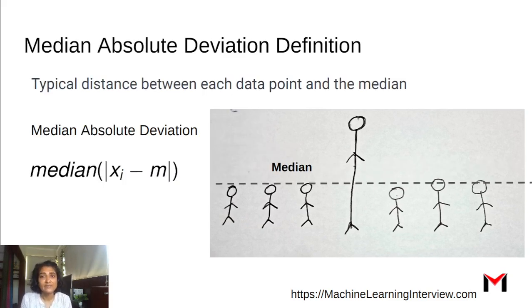What is the median absolute deviation? Median absolute deviation is a typical distance between each data point and the median. So it's the median of the absolute difference between each data point and the median.